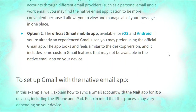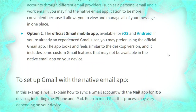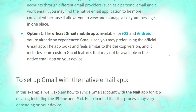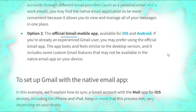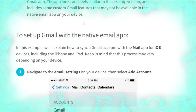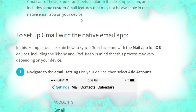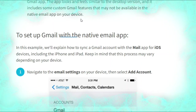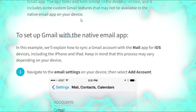Now we talk about Gmail for mobile devices. If you have a mobile device there are two main ways to access your Gmail account. Option one: the native email app on your device — if you have multiple email accounts through different providers you may find this more convenient because it allows you to view and manage all of your messages in one place. Option two: the official Gmail mobile app, available for iOS and Android — if you are an experienced Gmail user you may prefer it because the app looks and feels similar to the desktop version and includes custom Gmail features.